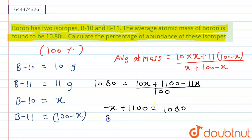So we get a value of x as 1100 minus 1080, and we get the value of x by solving this as 20. That is for boron 10 isotope, the percent of abundance is 20 percent.